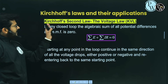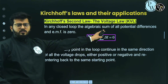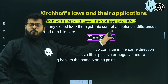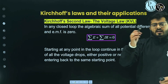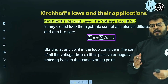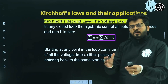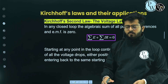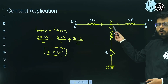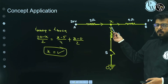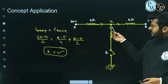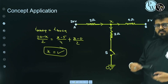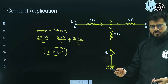Now let's look at the second law — Kirchhoff's Voltage Law, KVL. When we talk about Kirchhoff's Current Law, it is based on the law of conservation of charge: at the junction, no new charge is created or destroyed, so whatever charges enter must leave. That is conservation of charge.